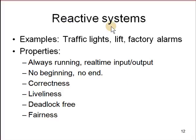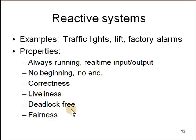There are other kinds of algorithms we won't cover in this class: reactive systems — things that never stop, algorithms that don't end. Examples are traffic lights, elevators going up and down, and factory alarms. These are always running; input is real time, and there's no beginning or end. The properties we look for in these are: correctness (does it always produce correct output?), liveliness (does it ever get stuck in some state or deadlock/freeze?), and fairness (if there's more input from one source, does everyone get an equal chance — like whether a traffic light gives both directions a turn?).